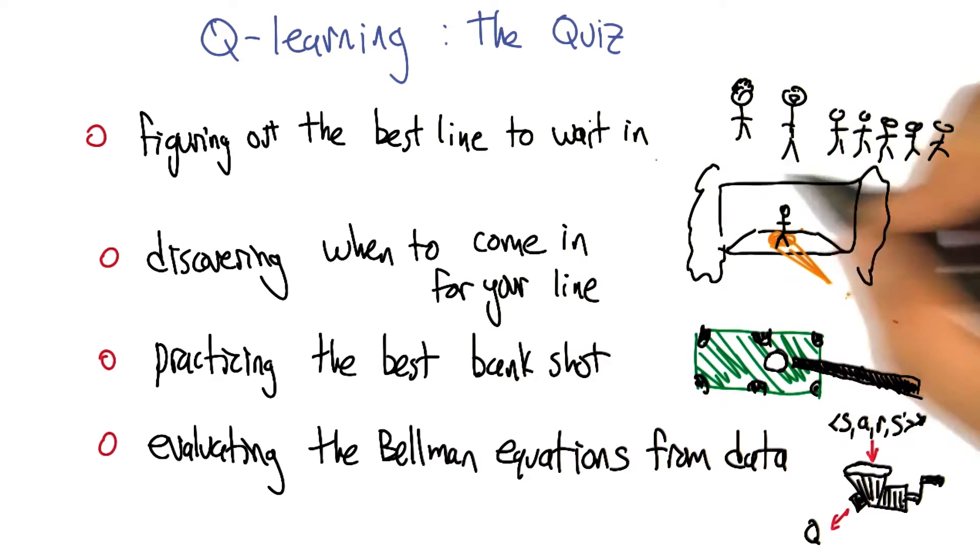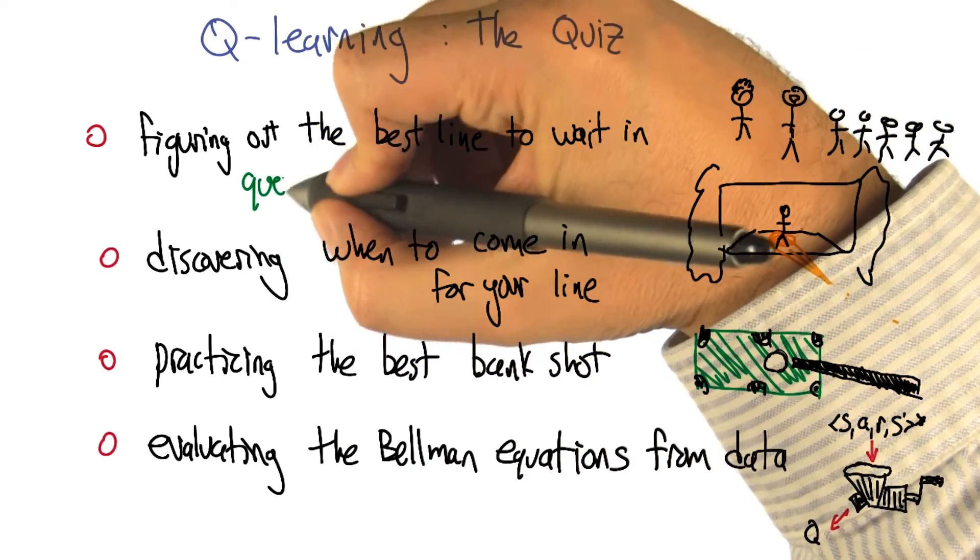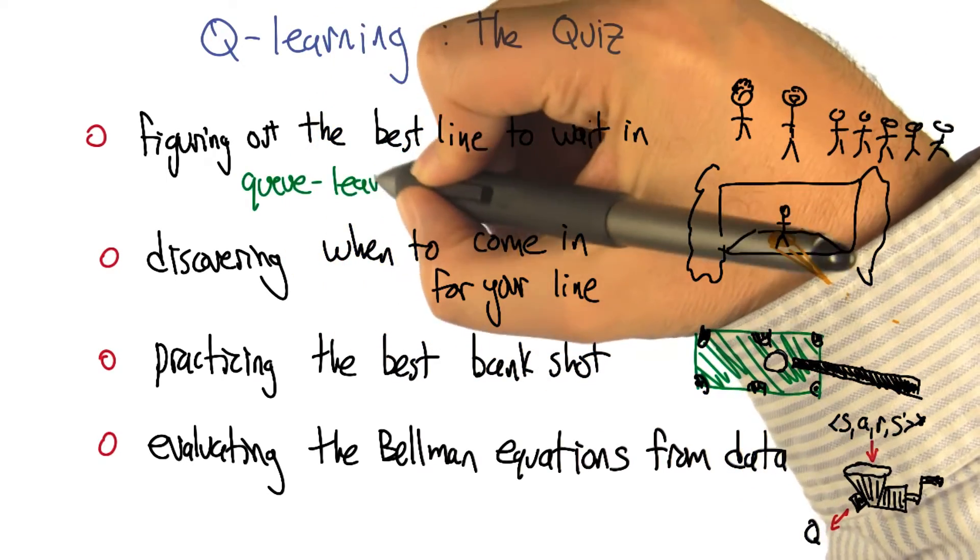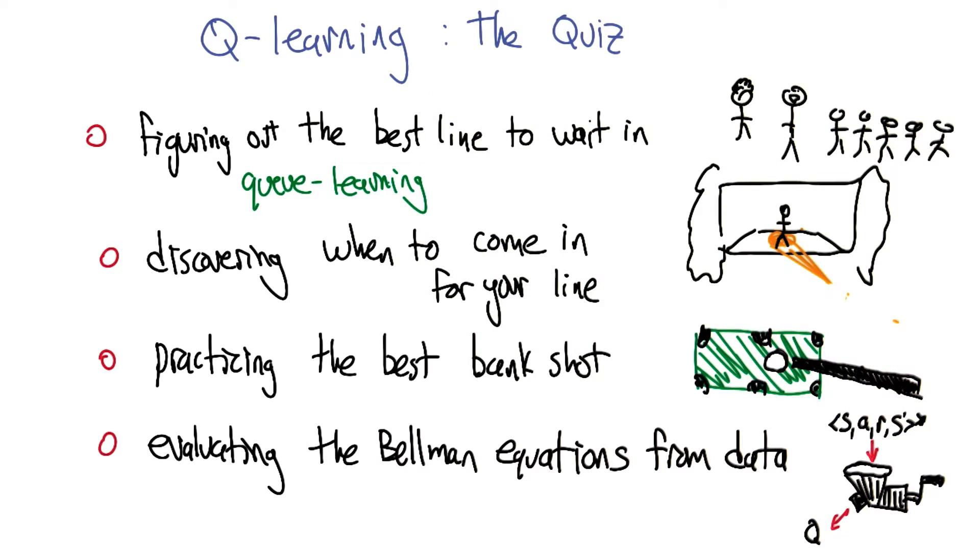Figuring out the best line to wait in, well, that is a Q, Q-U-E-U-E, which would make a lot of sense if I were, say, English. Yes, that's right. In fact, you are in this picture. Oh, yeah, yeah. That's the English version of Charles, the one with the top hat.